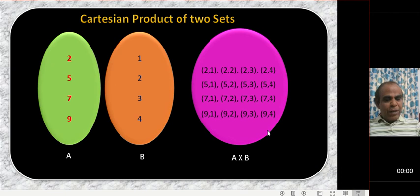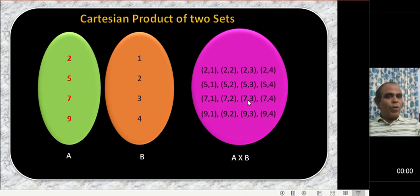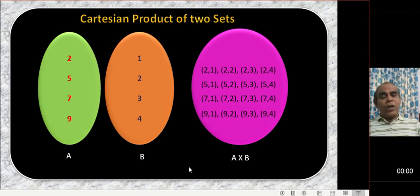So A cross B is a set whose elements are ordered pairs. In these ordered pairs, the first element is taken from the first set and the second element is taken from the second set. When you take all such ordered pairs, that collection is called the Cartesian product, or A cross B.